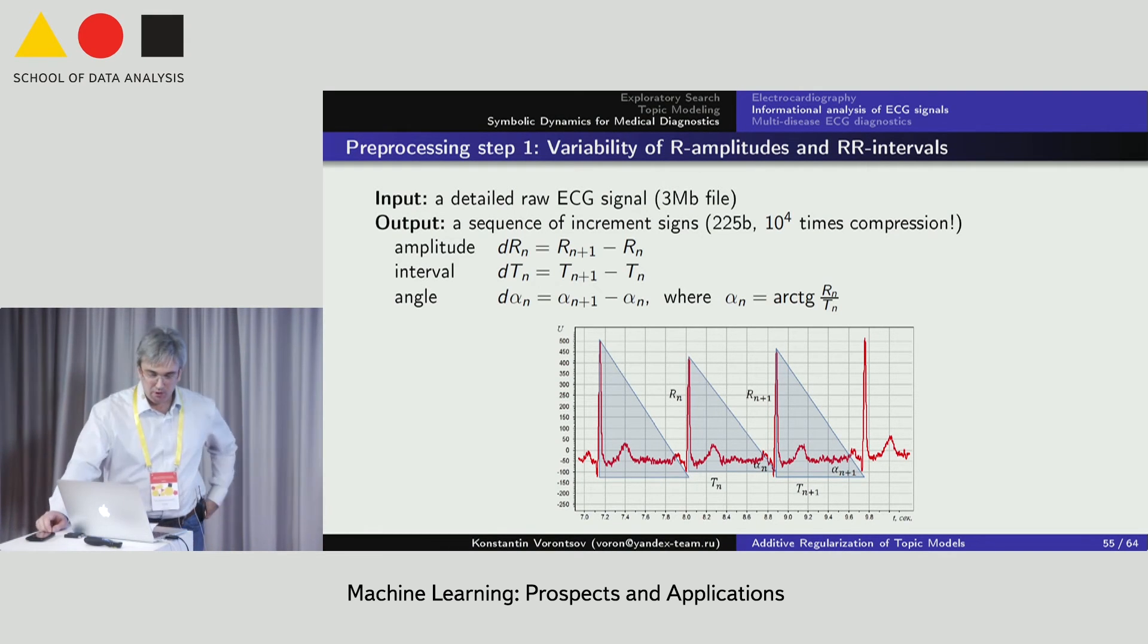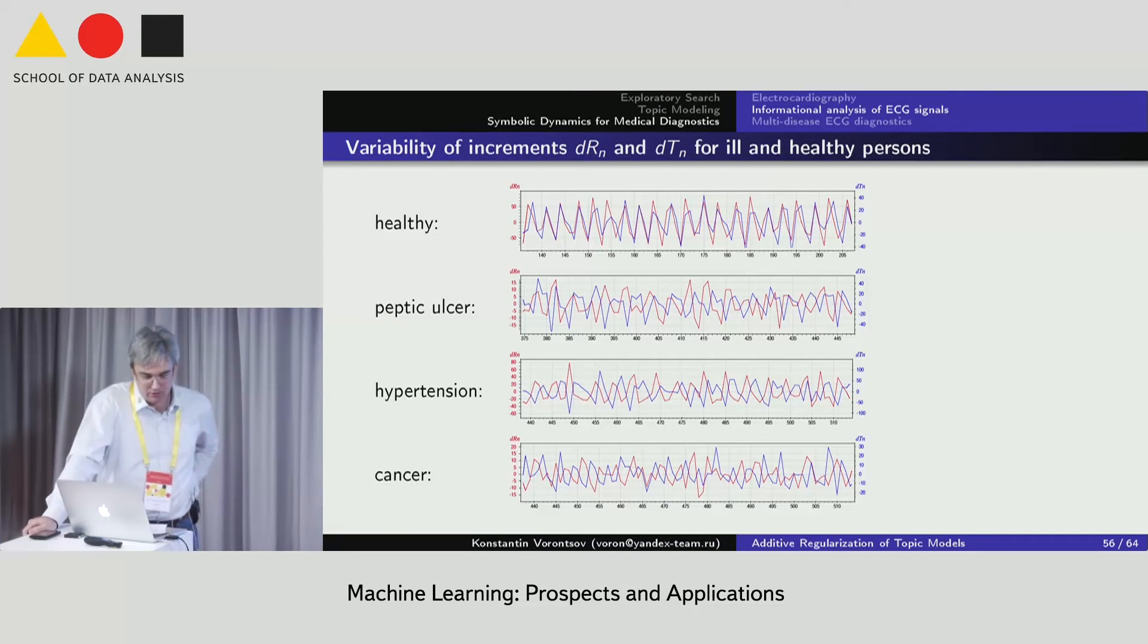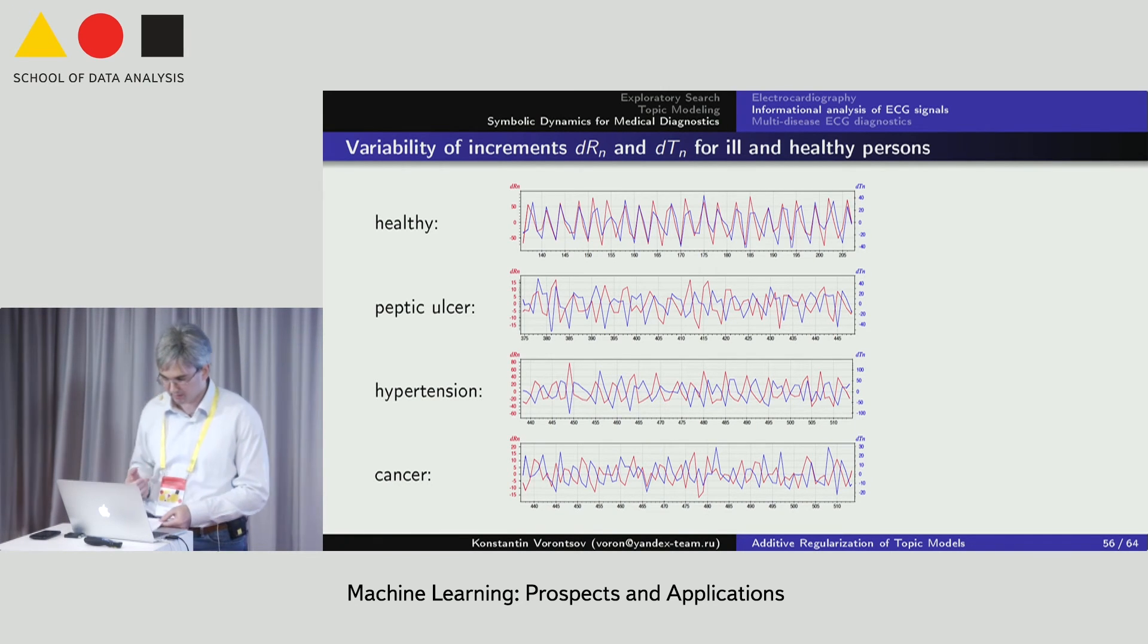The idea is very similar to the heart rate variability analysis. In the HRV analysis, only the variability of intervals between peaks is used. Uspensky proposed to extract more information from the ECG data and to analyze together the increments of amplitudes of intervals and also their ratio alpha between them. A sample visualization shows that the variations of these increments are not random and that each disease exhibits some specific patterns of variability. But we don't understand these patterns when we see these charts. We need machine learning to find these patterns automatically.